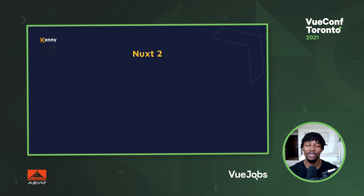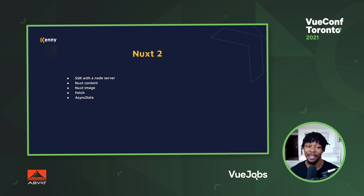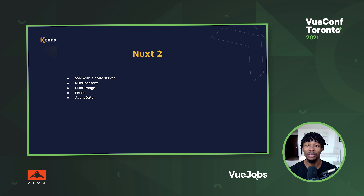Before we started talking about Nuxt 3, I'm guessing we've all been building with Nuxt 2, and Nuxt 2 came with a lot of awesome features. We're able to do things with the Nuxt content module, optimize images and all our media assets with the Nuxt image component. We had fetch and asyncData to fetch data. We had server-side rendering with the Node server within our Nuxt 2 applications, and so on and so forth.